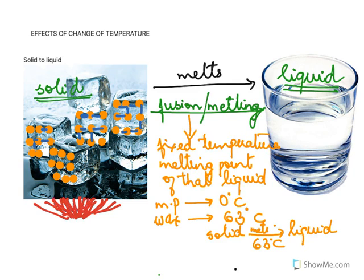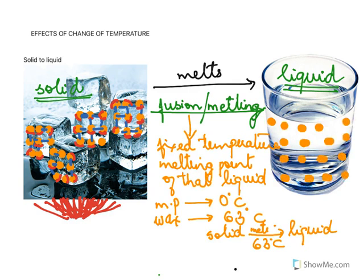When heat is supplied to it, these molecules gain this heat — they all gain this extra heat and they get more energy. They begin to vibrate faster. As they begin to vibrate faster, they are able to overcome this force of attraction. The molecules become more free, they break this force of attraction, and then we get the liquid.